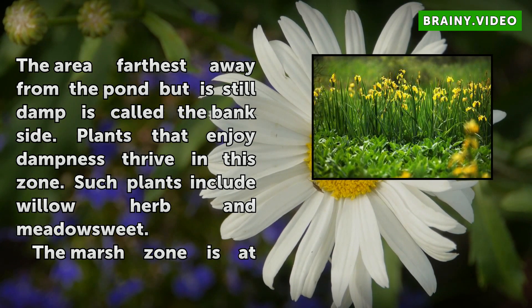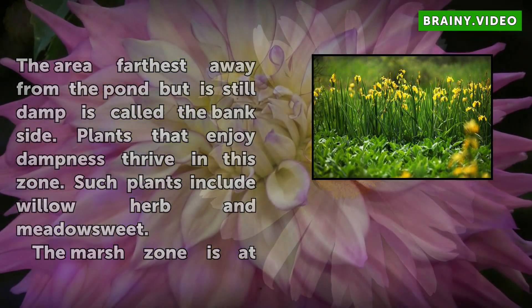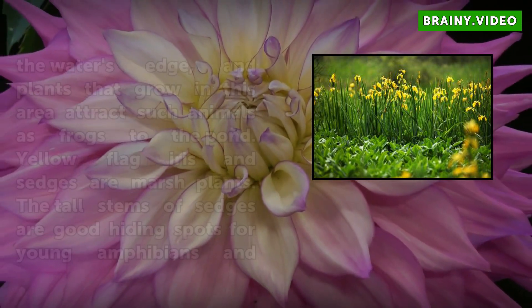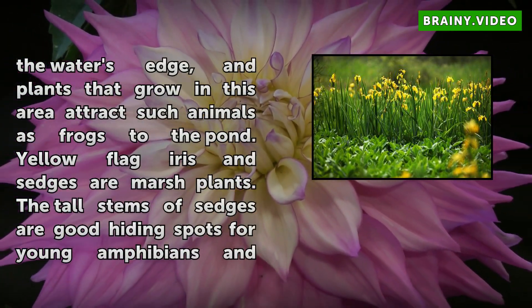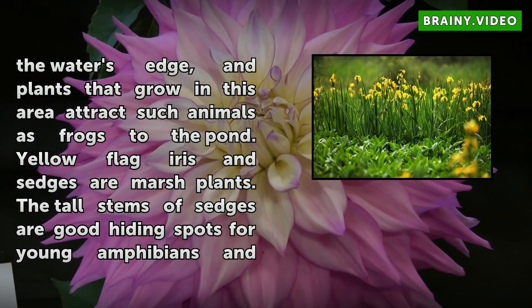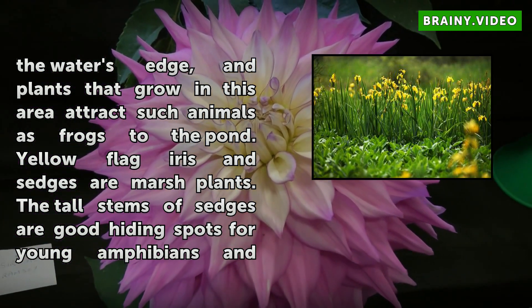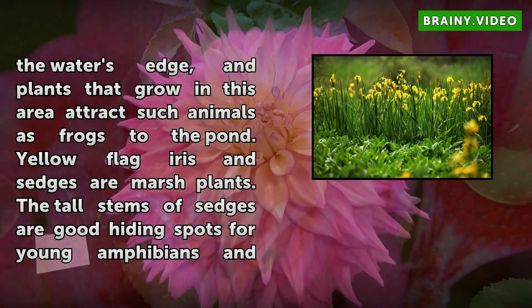The marsh zone is at the water's edge, and plants that grow in this area attract such animals as frogs to the pond. Yellow flag iris and sedges are marsh plants. The tall stems of grass edges are good hiding spots for young amphibians and dragonfly nymphs.